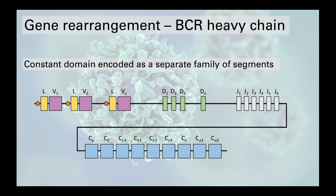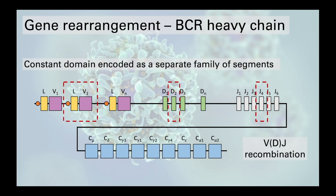There are also nine segments that encode the constant region, which is where the genes encoding the different Fc regions that allow for class switching reside — we discussed these in a video on B lymphocytes. What is going to happen during VDJ recombination is that we select one segment from the V family, one from the D family, and one from the J family at random and join these together to form a unique piece of DNA that will encode the Fab region of the antibody. This process is also happening in the light chain as well as in the T cell receptor.